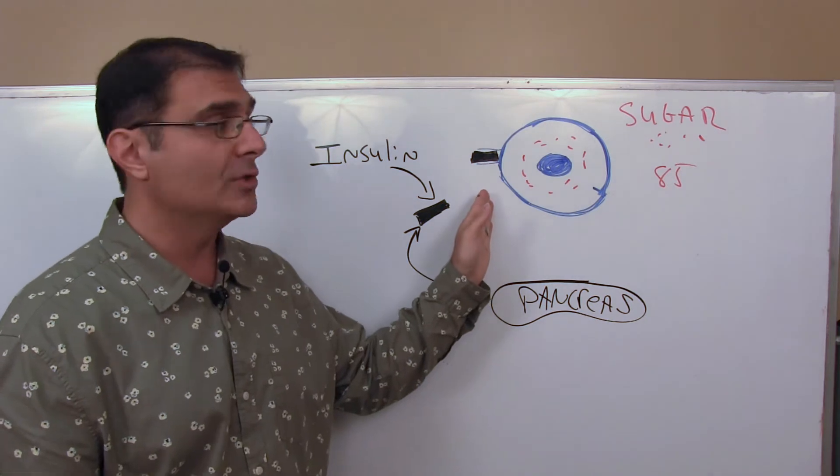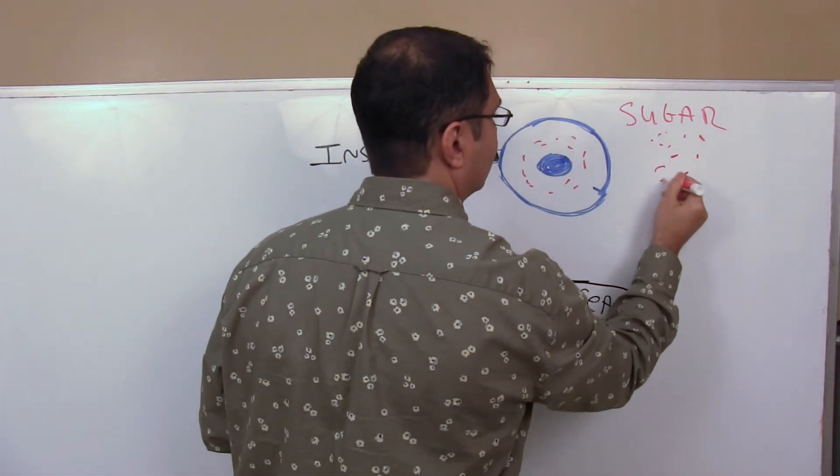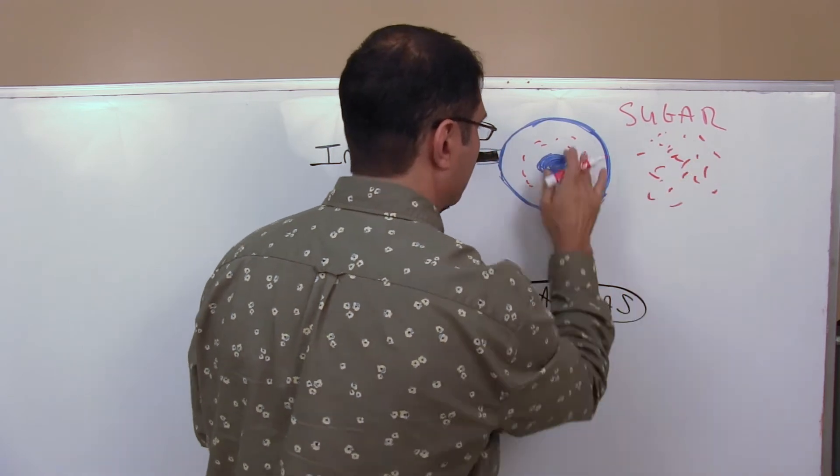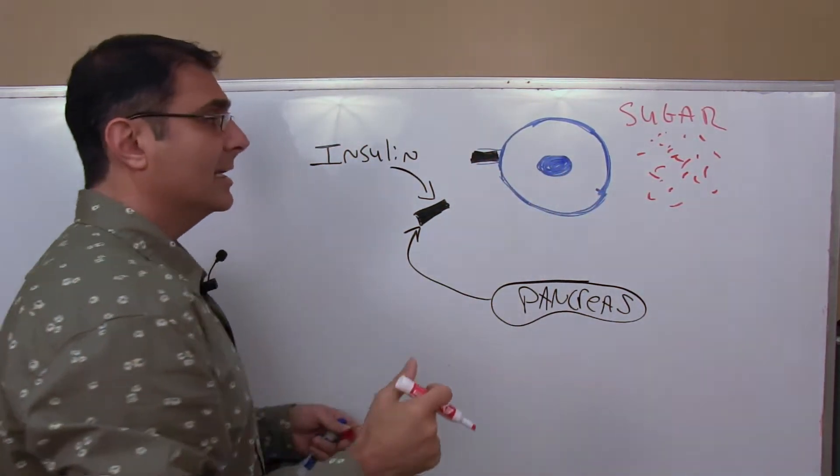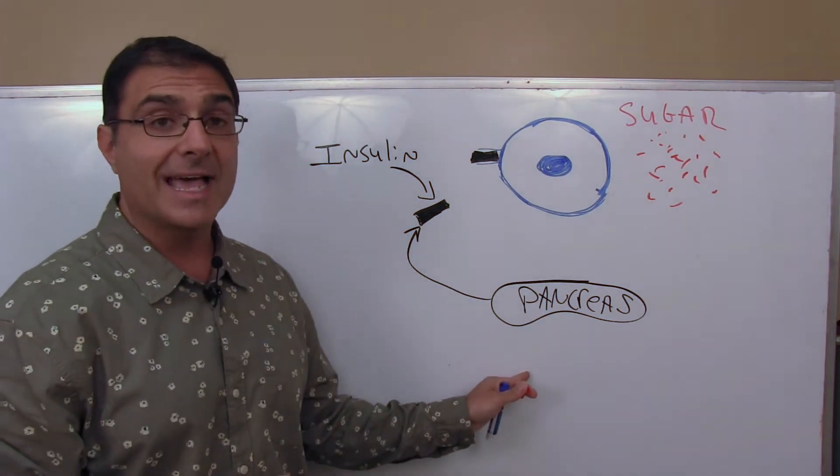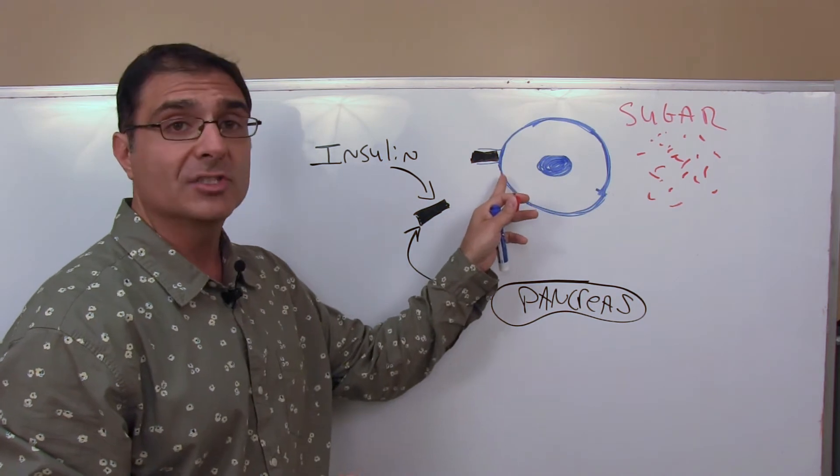Now, similar thing happens with type 2 diabetes. What happens with type 2 diabetes? We got a bunch of sugar in the blood. So here's all the sugar. We got all the sugar in the blood. We got no sugar in the cell. So the body realizes that the pancreas realizes that and it goes, wow, we got to make some insulin. The pancreas makes some insulin, insulin plugs into the receptor.